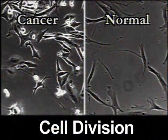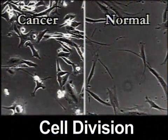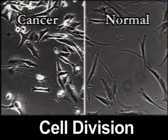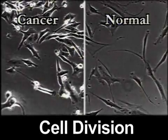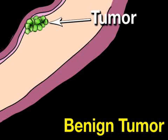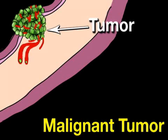Whatever the cause of DNA mutation, once it occurs, cancerous cells often begin to grow and divide at a very rapid rate. This can lead to a built-up mass of cells known as a tumor. Sometimes a tumor will be benign, meaning that it remains self-contained. Other tumors are malignant or cancerous and actually attract their own blood supply.